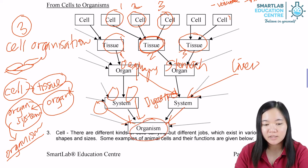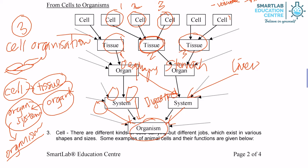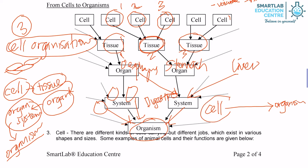So this is cell organization. Cell organization tells us how a simple cell is organized into the most complex form — the organism. It shows how a simple cell can make up a very, very complex organism.